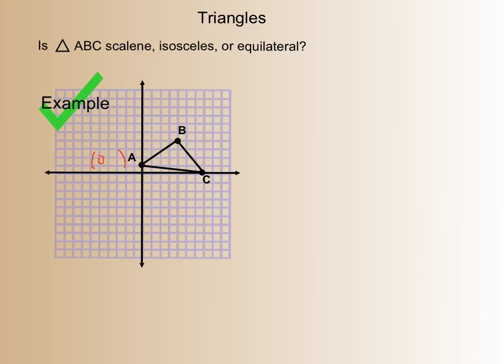A is going to be 0, 1. B is 1, 2, 3, 4, 1, 2, 3, 4, 4, 4. And C is 1, 2, 3, 4, 5, 6, 7, 0.